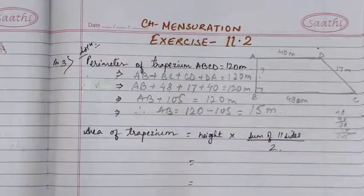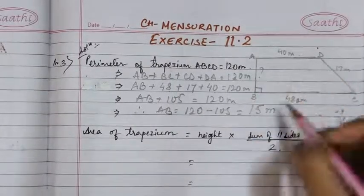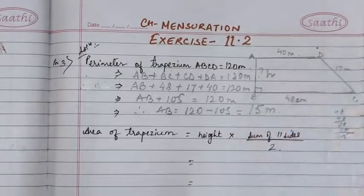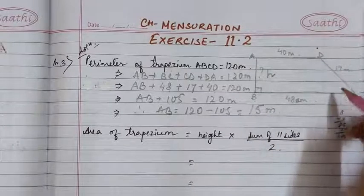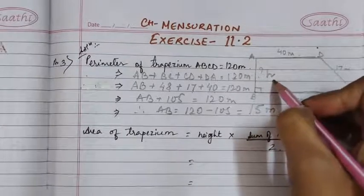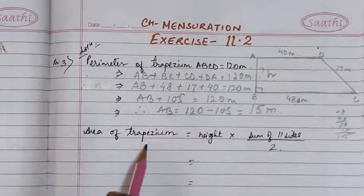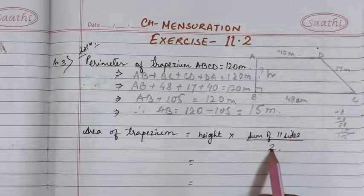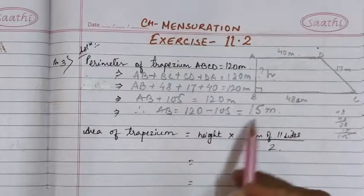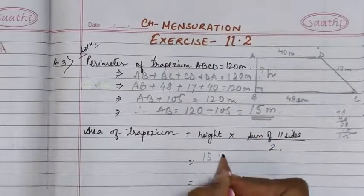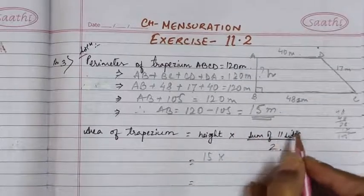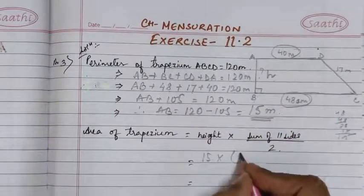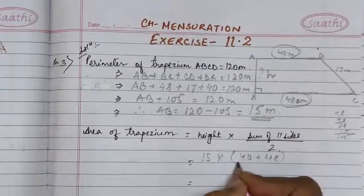Now, AB is perpendicular to BC, so AB is the height of this trapezium. Now we have got the height, so we can easily find the area using the formula: Area = height × (sum of parallel sides) ÷ 2. The height is 15 m and the sum of the parallel sides will be AD + BC = 40 m + 48 m. So we write: 15 × (40 + 48) ÷ 2.